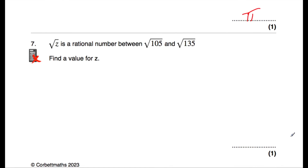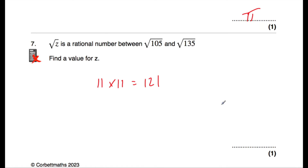Question number seven says: the square root of z is a rational number between the square root of 105 and the square root of 135. Find the value of z. If it's rational, it must be a square number — we need a square number between 105 and 135. Thinking about 11 squared: 11 times 11 is 121. The square root of 121 is 11, which is rational. So z is 121.